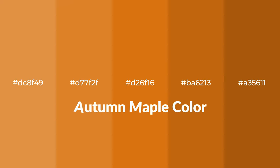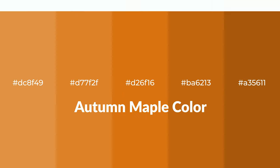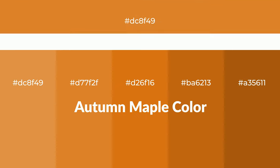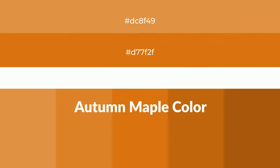Warm shades of autumn maple color with a brown hue for your next project. To generate tints of a color, we add white to the color. Tints create light and exquisite emotions.